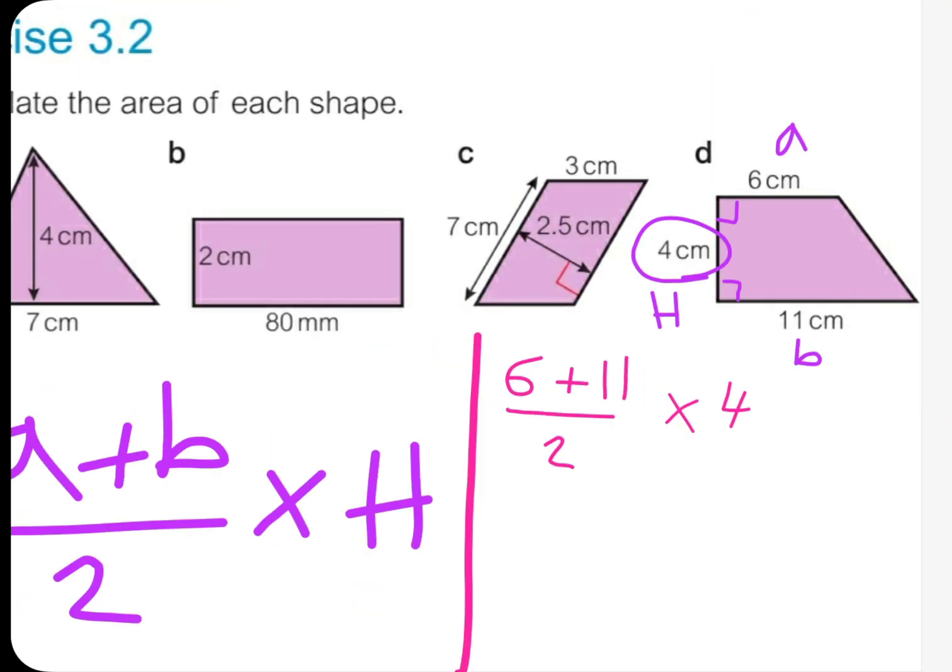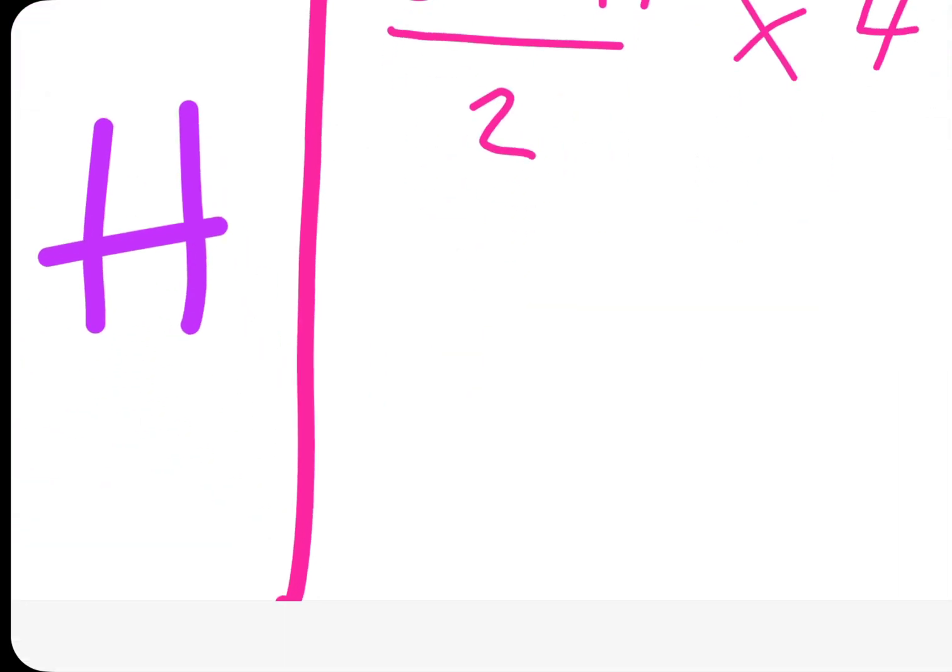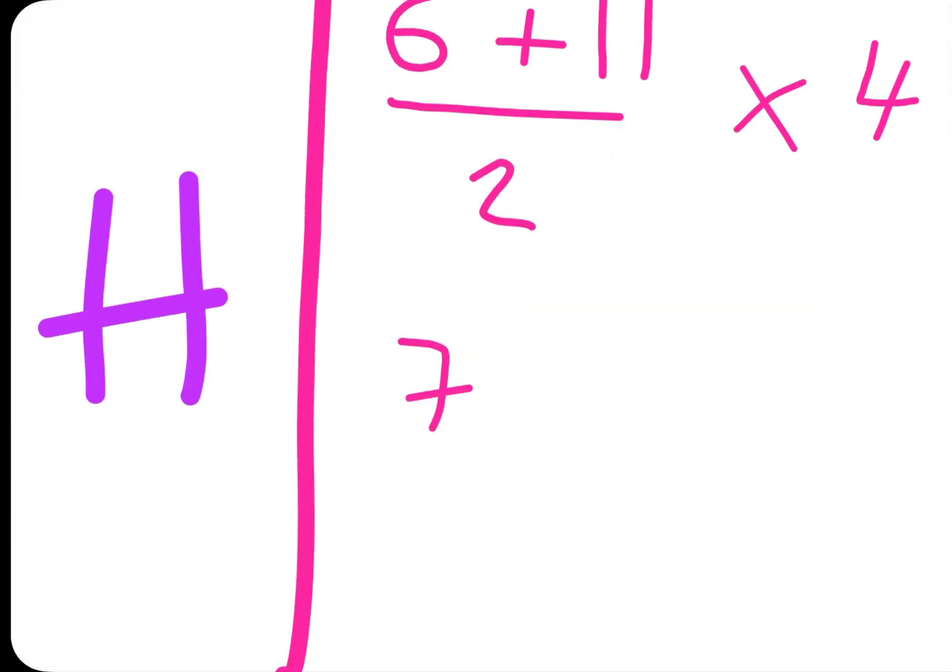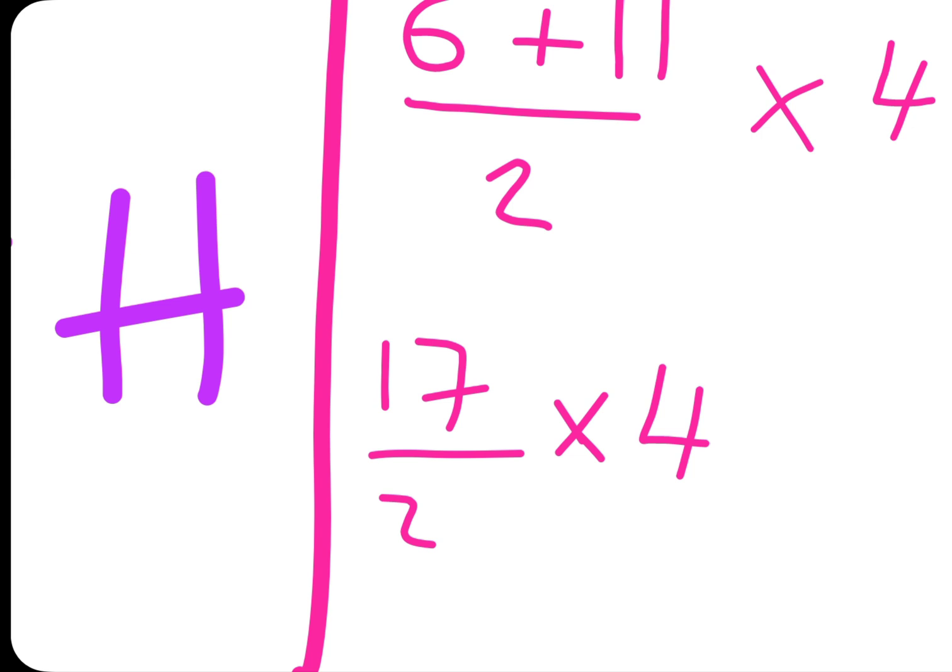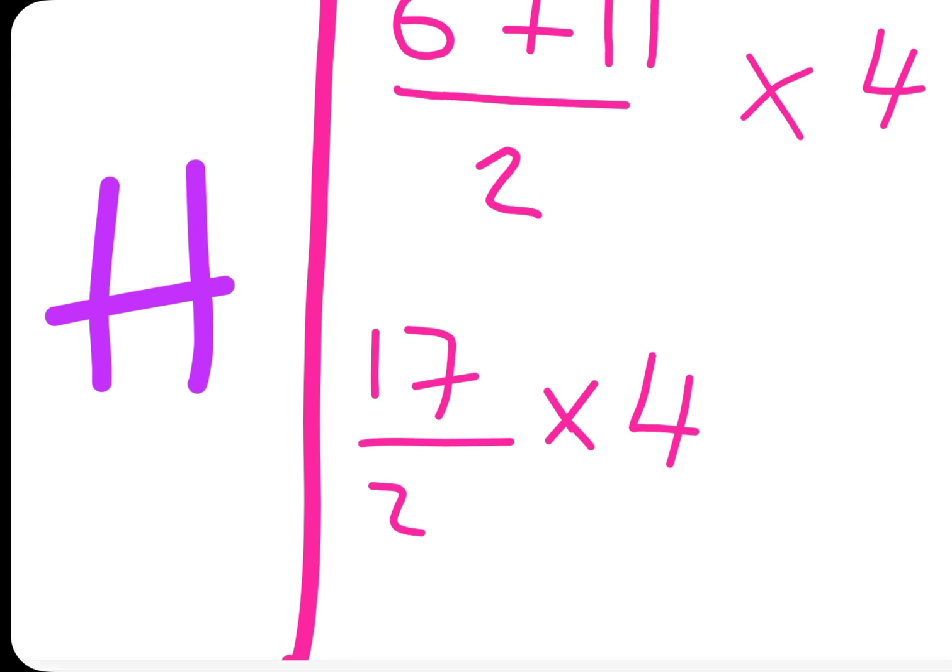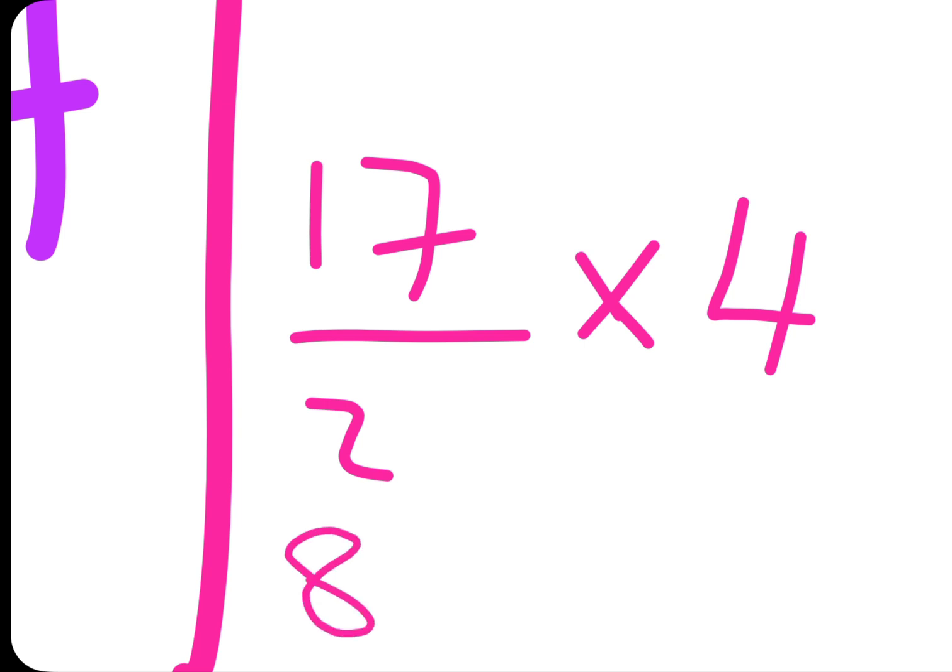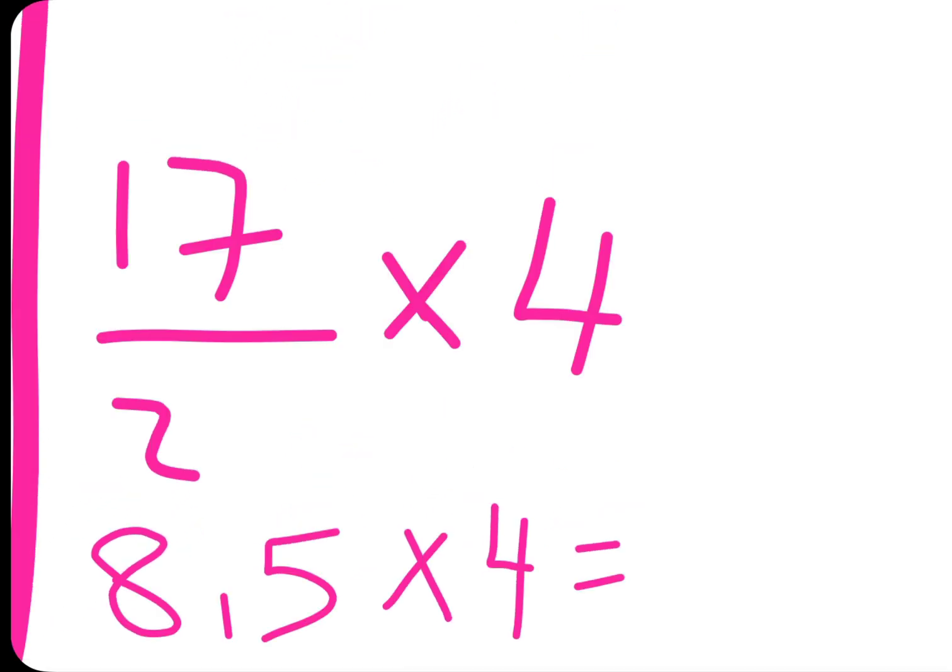Now, 6 plus 11 equals 17, and then divide by 2, multiplied by 4. So 17 divided by 2 is 8.5, multiplied by 4 equals—8 times 4 is 32, and then half of 4 is 2, so the answer will be 34.